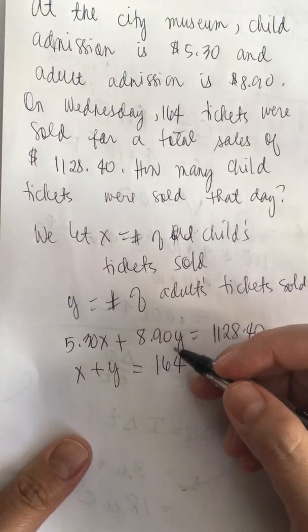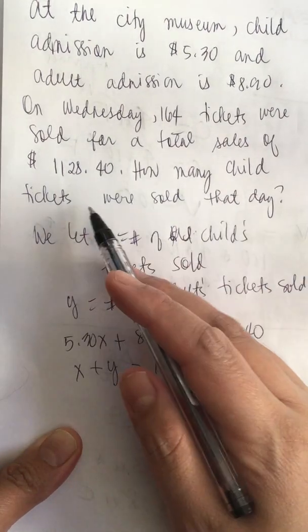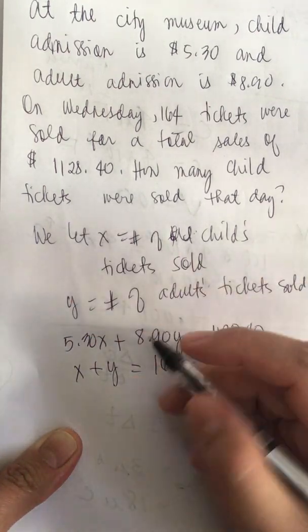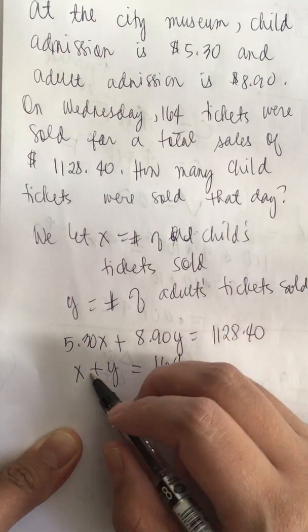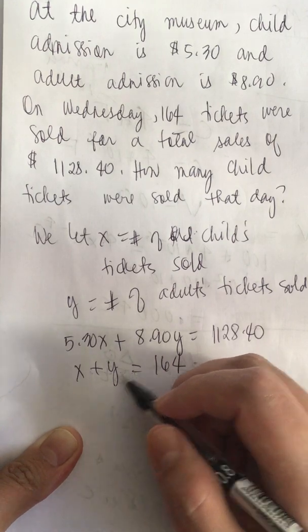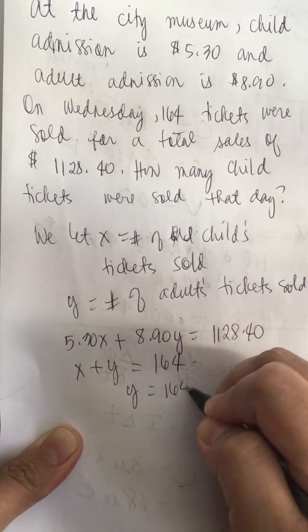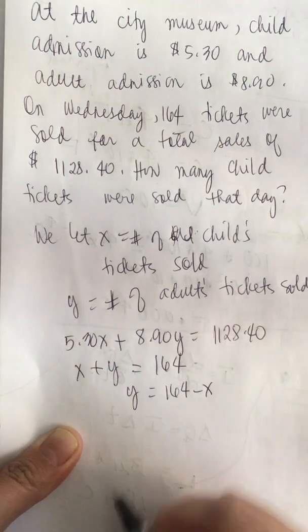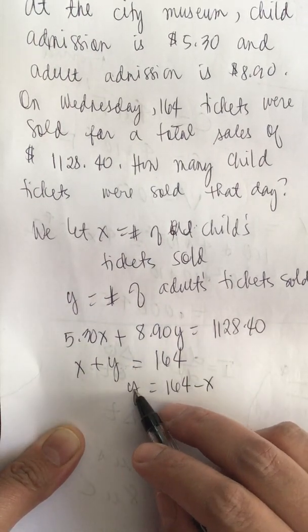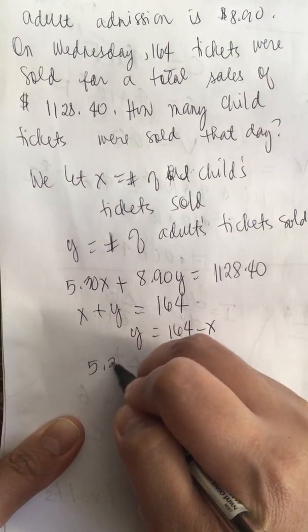Now we have our two equations and two unknowns. Since they asked for the number of child tickets, we can solve the second equation for y. So y is equal to 164 minus x, and we can easily substitute that into the first equation.